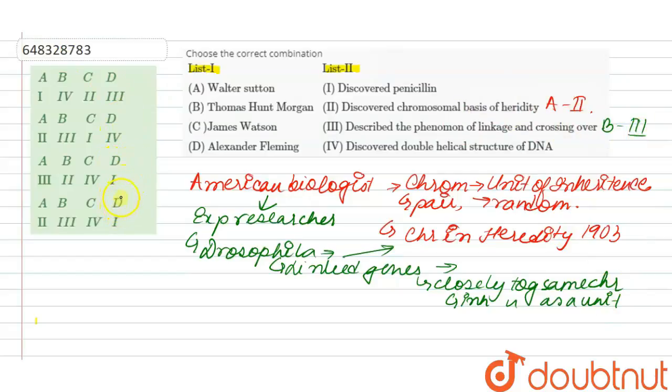Next is James Watson. We have heard this name thousands of times - Watson and Crick model. Watson was an American molecular biologist as well as a zoologist and geneticist. He along with Francis Crick proposed the double helix structure of the DNA molecule.